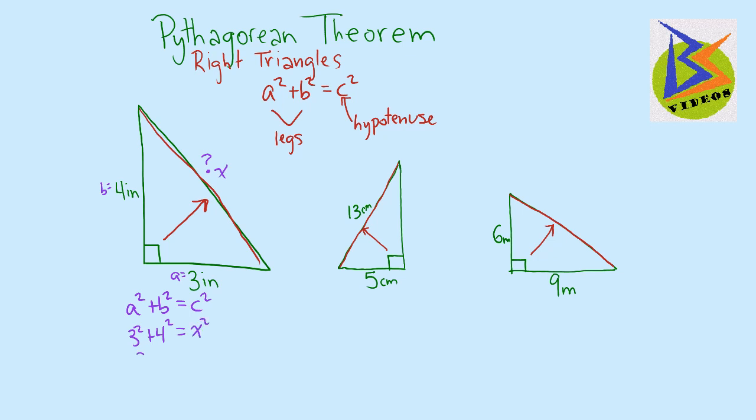3 squared is 9, 4 squared is 16, because 4 times 4 is 16, and we have x squared. 9 plus 16 is 25, which is x squared.